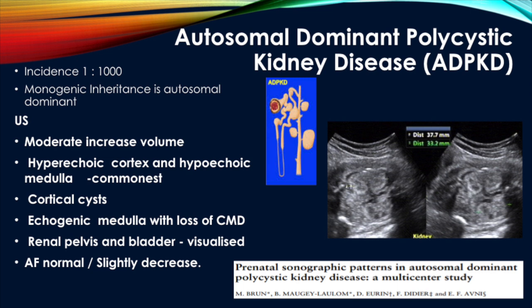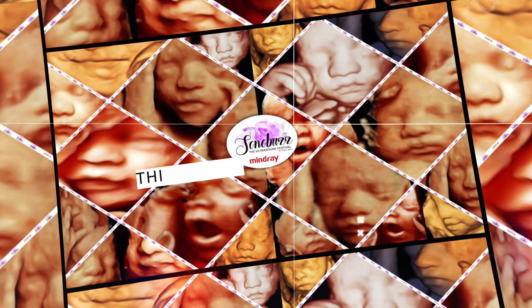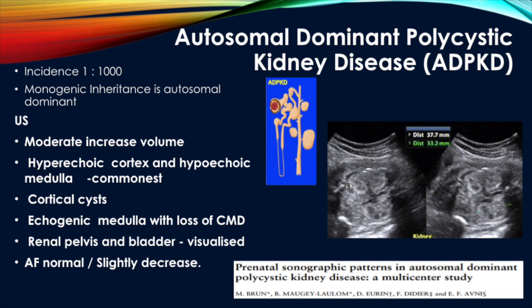Autosomal dominant polycystic kidney disease (ADPKD) is characterized by multiple cysts arising mainly from all areas of the nephron and very few from the collecting ducts. These are tiny cysts; since nephrons are in the cortex, these tiny cysts first cause increased cortical echogenicity. Therefore, hyperechoic cortex with hypoechoic medulla is the commonest sonographic finding in ADPKD. In few cases cortical cysts can be seen. Echogenic medulla with loss of corticomedullary differentiation — typical of ARPKD — is very uncommon in ADPKD, making differentiation between the two difficult when it occurs. As these tiny cysts don't compromise urine production, the renal pelvis and bladder are seen and the amniotic fluid is normal.